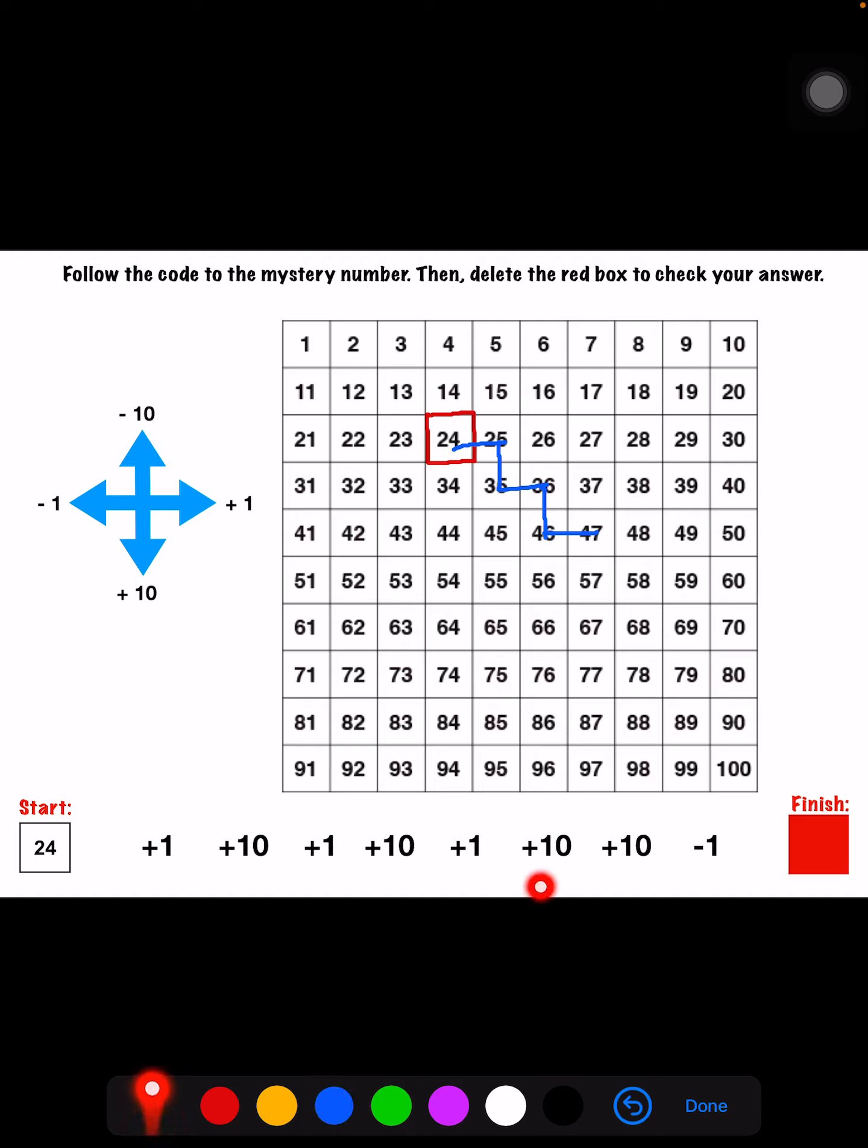Now I'm going to add 10 two times, plus 10 plus 10. 47, 57, 67. I went down two times. So I added 20 total. 10 to 57, 20 to 67. And then my last part of my code says minus one. That means I'm going to go left one on my code. 67 minus one is 66.